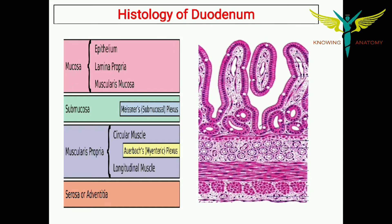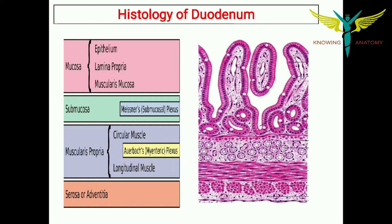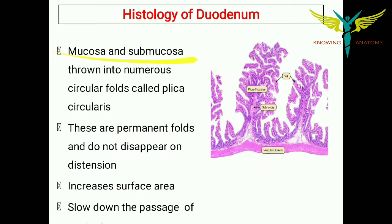Coming to the histology of the duodenum, we will discuss in detail in this video. It has four layers: mucosa, submucosa, muscularis propria, and the serosa. The mucosa contains epithelium, lamina propria, and muscularis mucosa. The submucosa contains Meissner's plexus, or the submucosal plexus. The muscularis propria contains an inner circular layer, an outer longitudinal layer, and between these two layers there is a plexus called Auerbach's or the myenteric plexus. The fourth layer is the serosa or the adventitia, also called fibrosa.